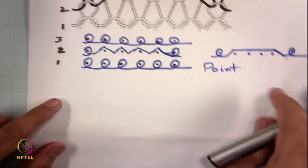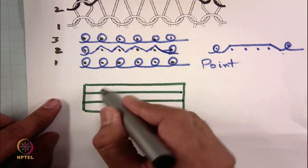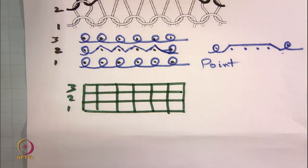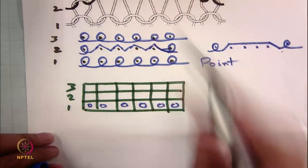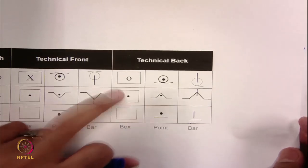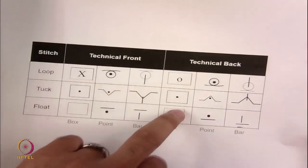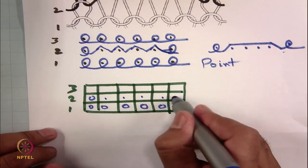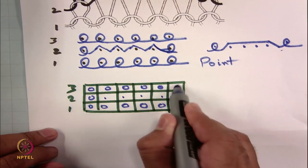For box notation, make a box with three courses and six columns. In the first course, all technical back — put zeros for all six. In the second row, you have zero, then four tucks. Tuck on technical back side is represented by a dot in a box. So four dots representing four tucks, then zero. In the third course, all technical back — simply put six zeros. This is your box diagram.